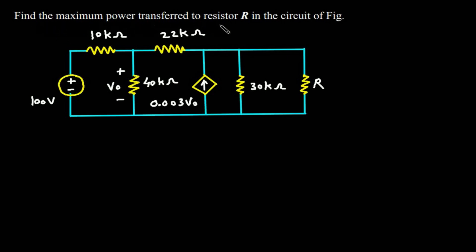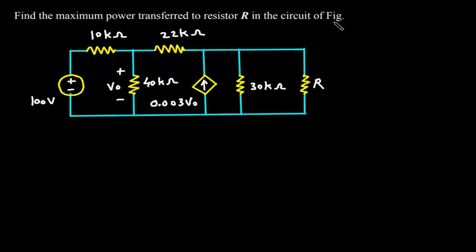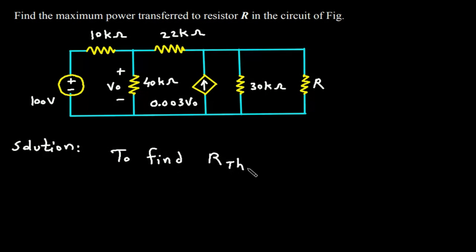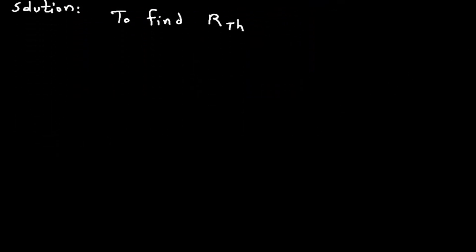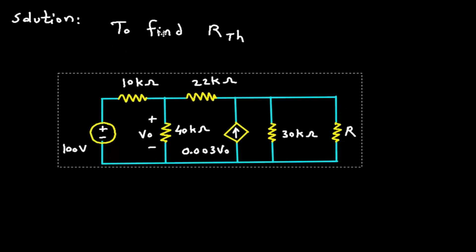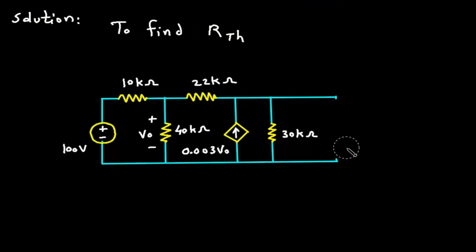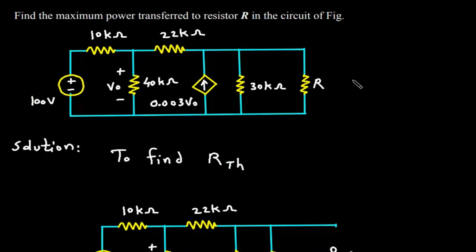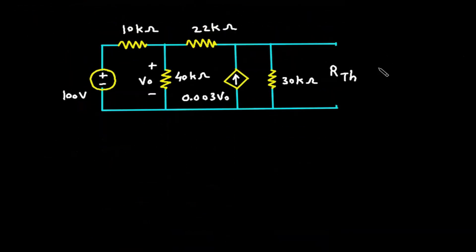Find the maximum power transfer to resistor R in the circuit. We will first find RTH. Here this will be RTH — we have to find maximum power in this resistor R, so this will be RTH.